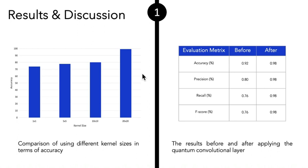For the first experiment, on the left side of the screen, it is a comparison of using different kernel sizes in terms of accuracy. From this figure, we can conclude that the best kernel size that we got is 20 by 20. We got accuracy of about 98.35 percent, and the worst kernel size that we got is 1 by 1, with accuracy of 73.2 percent.